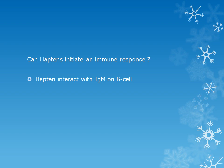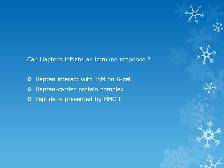Can haptens initiate an immune response? Repeatedly, they cannot initiate an immune response on their own. The hapten should interact with some immunoglobulin molecule, and when it interacts with the immunoglobulin molecule it results in the formation of a hapten-carrier protein complex. When this complex is formed, a polypeptide composition forms, and this peptide is presented by MHC class II, resulting in the activation of helper T cells, secretion of interleukins especially interleukin-12, and ultimately activation of B cells leading to formation of antibodies.